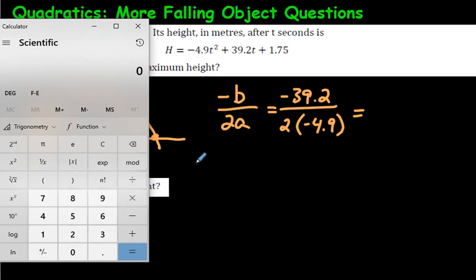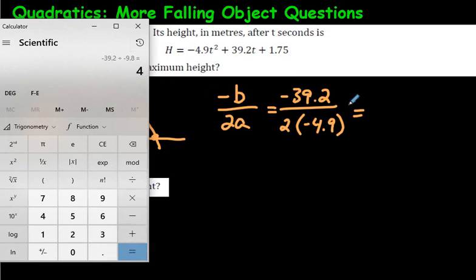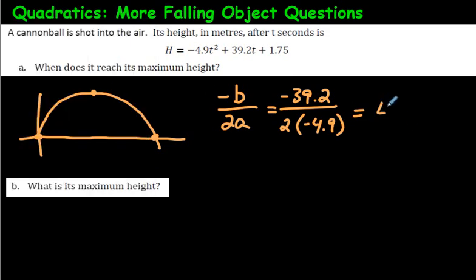4.9 times 2 is 9.8, so we have negative 39.2 divided by negative 9.8. On the calculator, you get 4. So we know the maximum height will occur after four seconds — we've found t using that quick method.